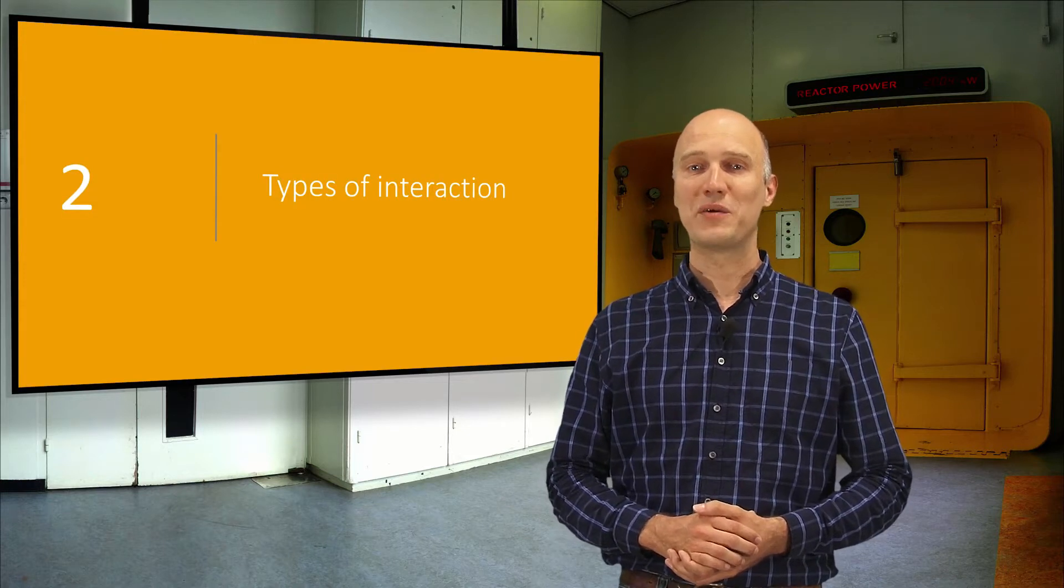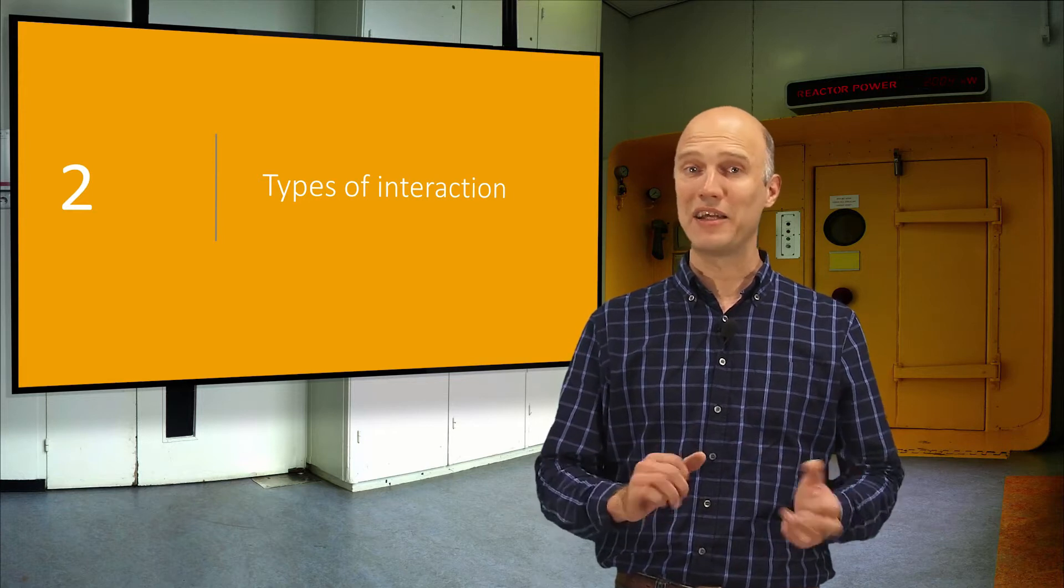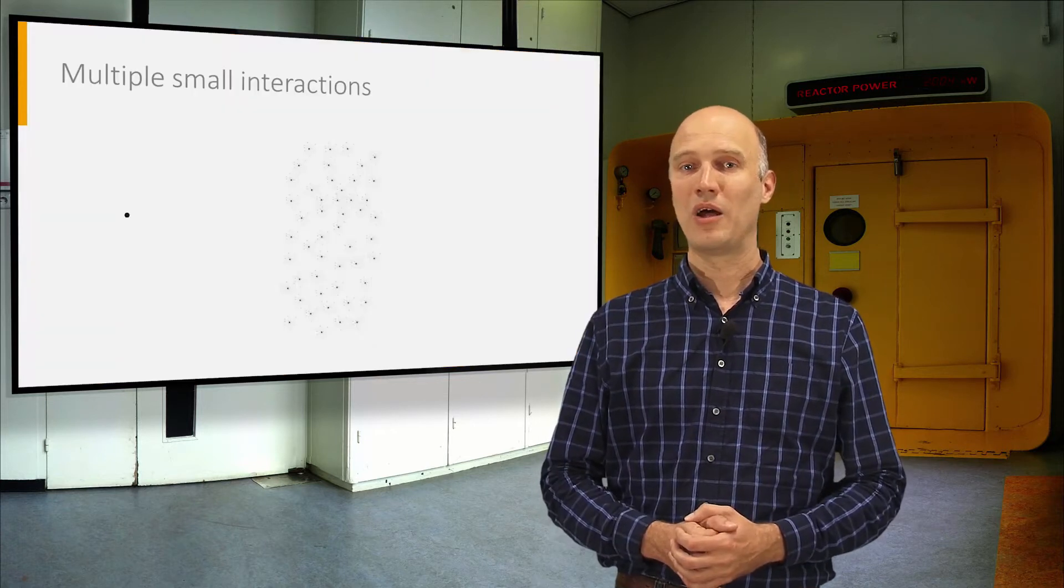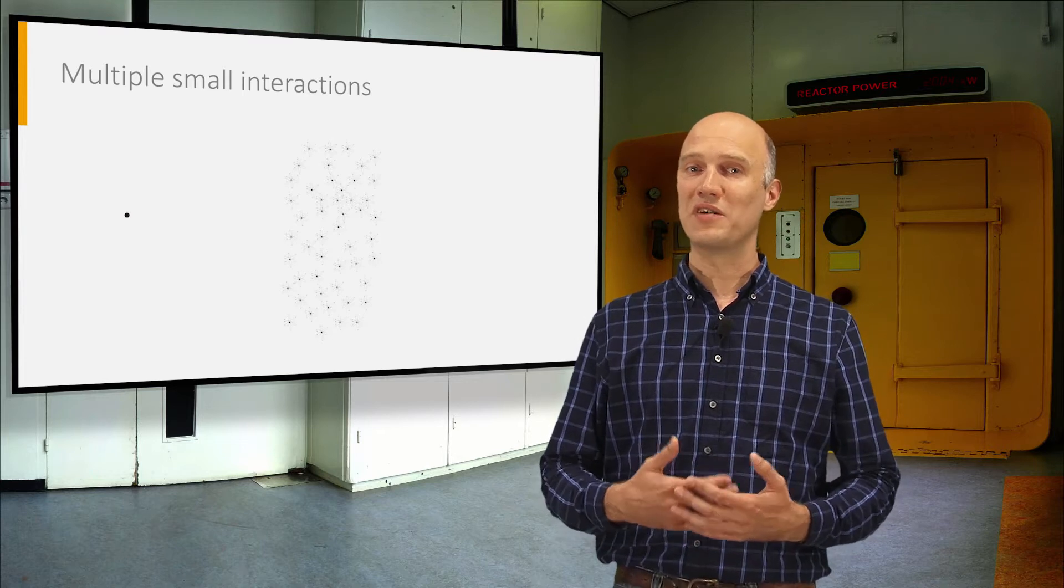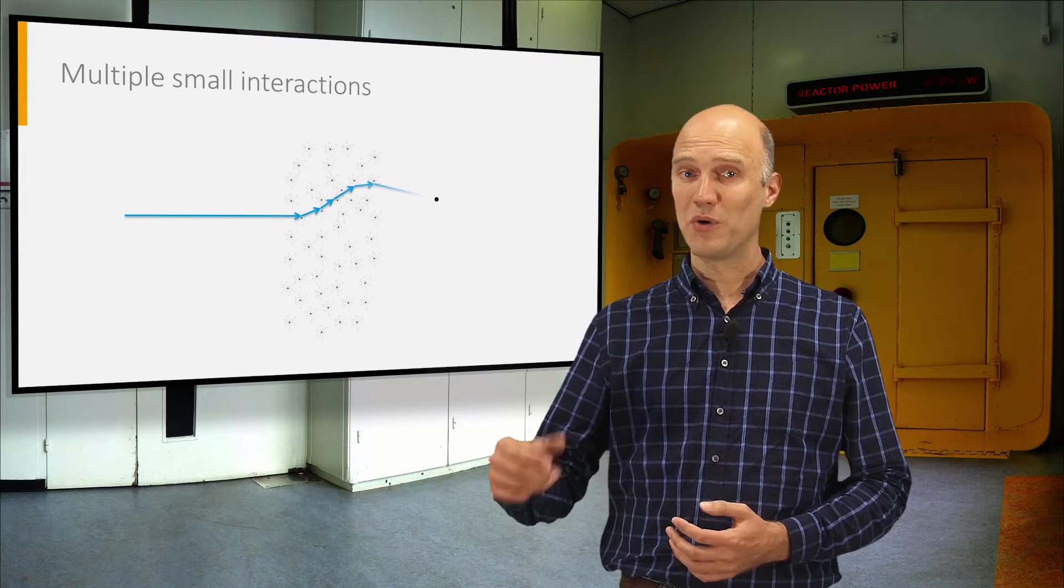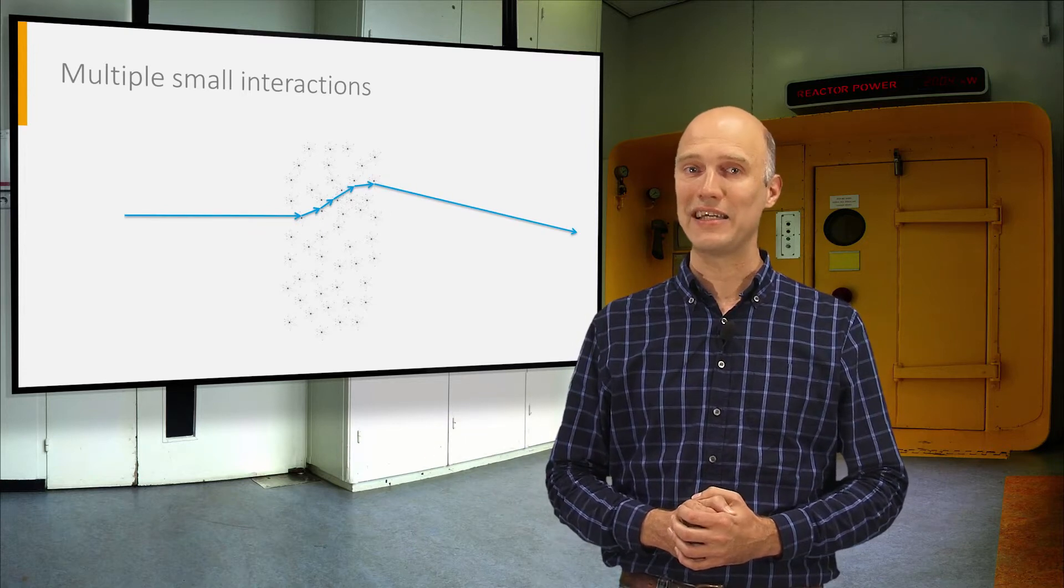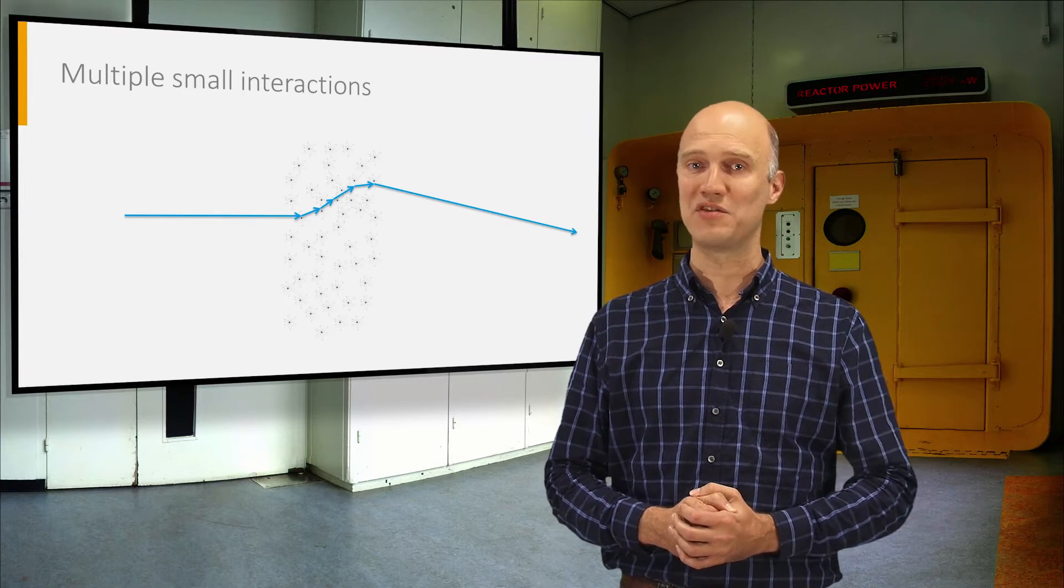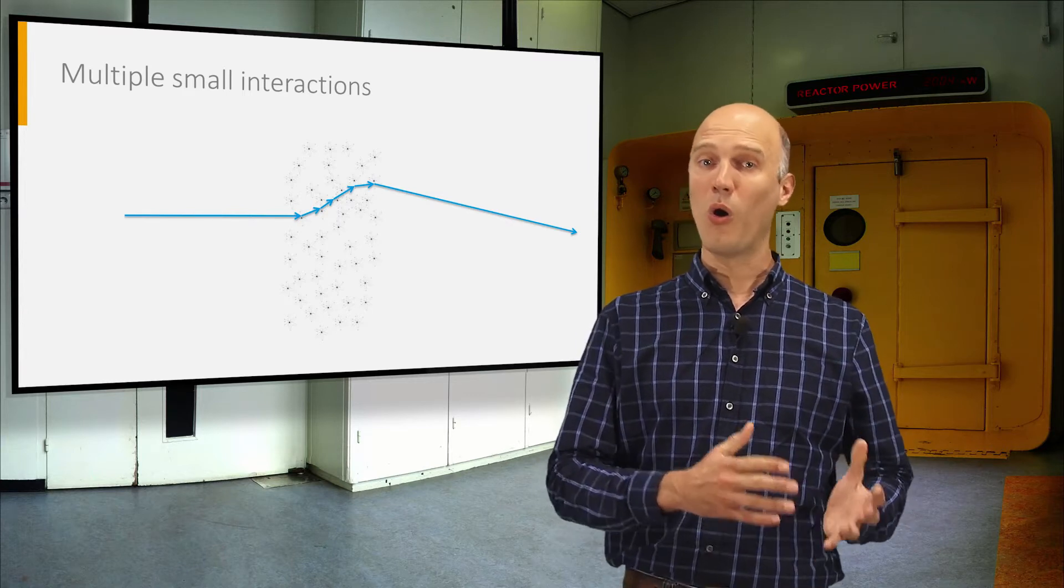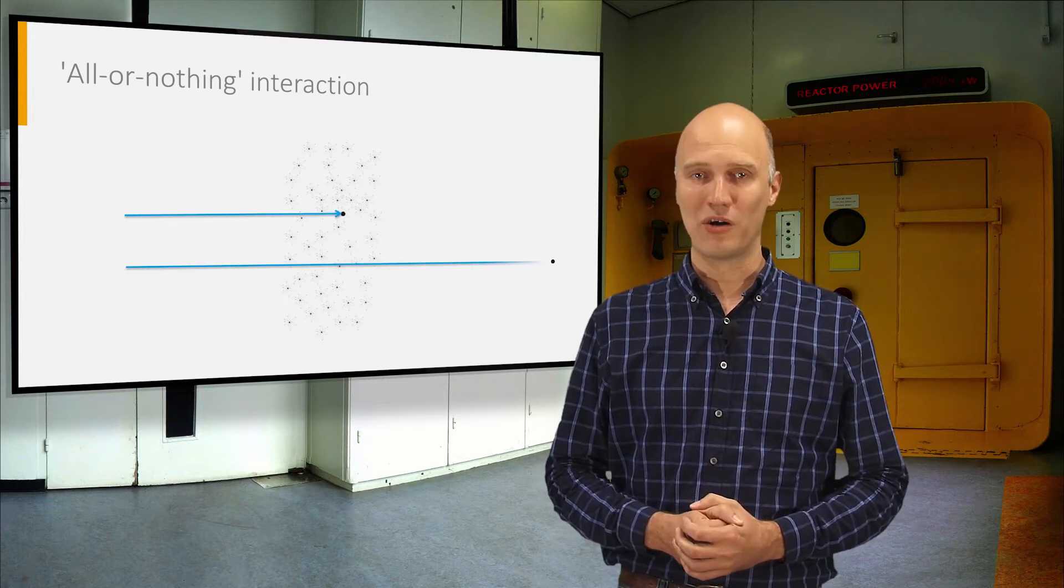The ways of interaction can be subdivided into two large groups, depending on the type of particle. When a particle passes through a slab of matter, it can either undergo a large number of small interactions, in which it is scattered slightly and loses a small part of its energy during each interaction, or it can be eliminated in a single, all-or-nothing interaction.